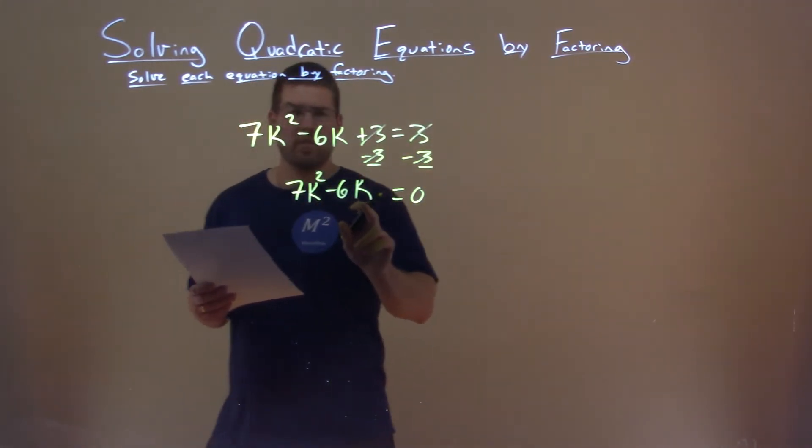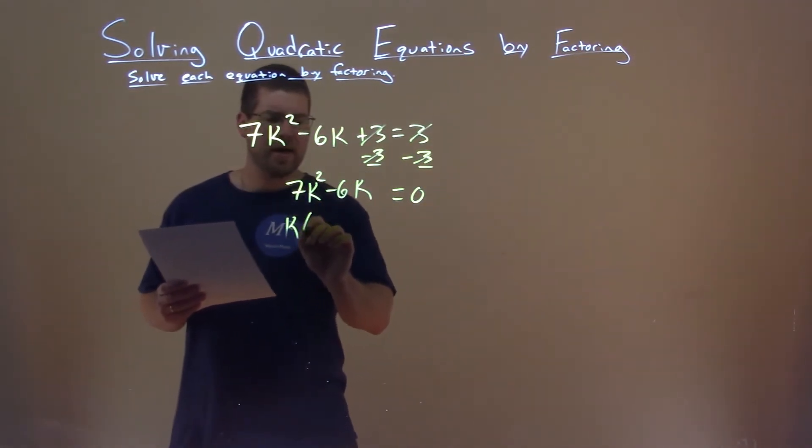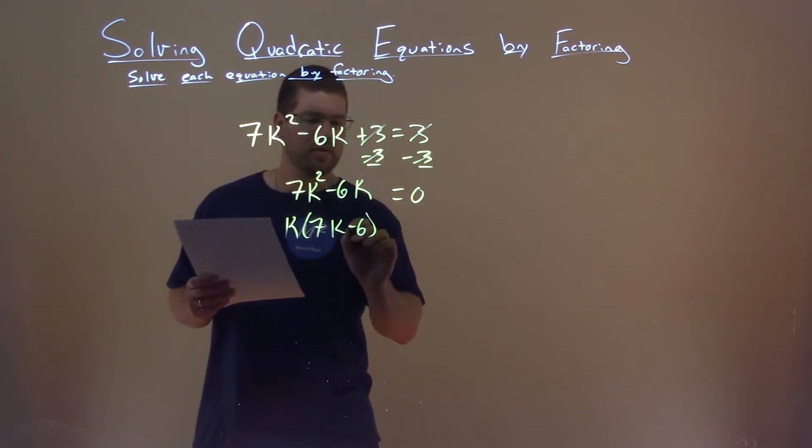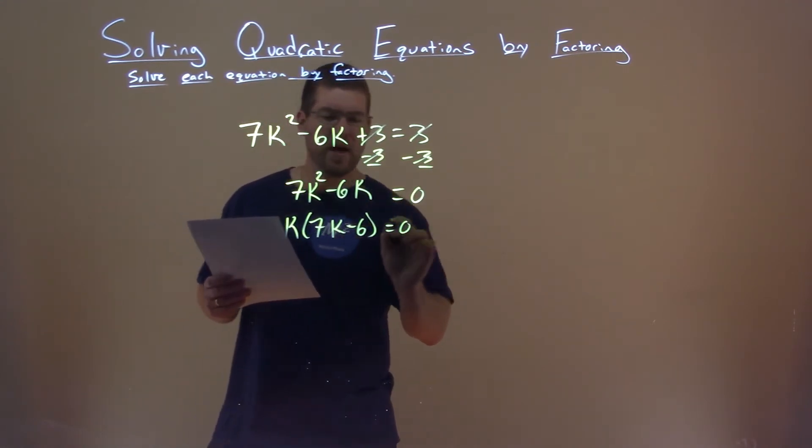I see that there's a k in both parts here, so I pull out a k, I'm left with 7k minus 6, and actually, we're now in factored form.